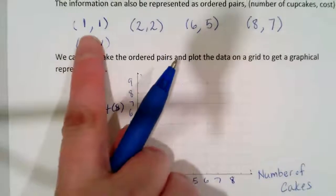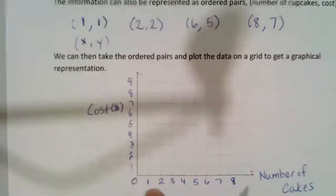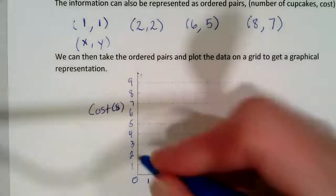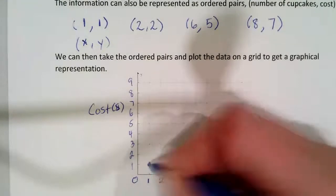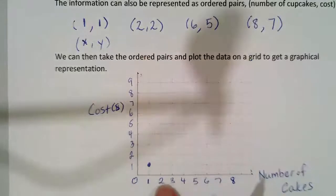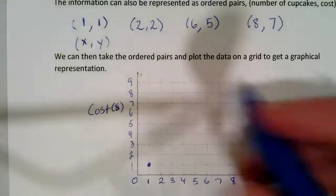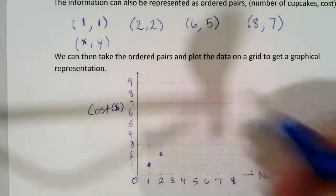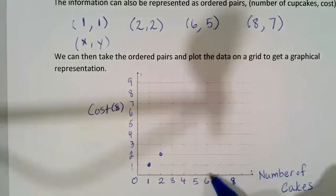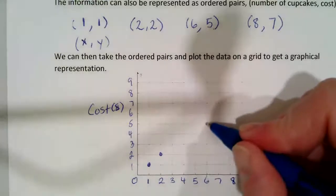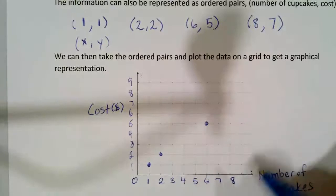And now this corresponds to the point (1, 1). So you go always one on the horizontal axis first and up to the one, and there's our first point. The second point, (2, 2). So you start with two on your horizontal axis and move up two on the vertical. We jump to six, so it's going to go from six up to five and from eight up to seven.